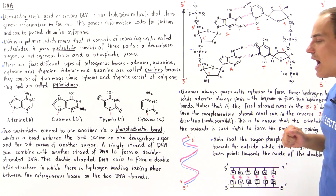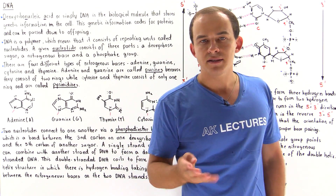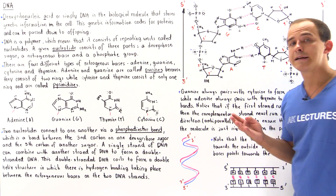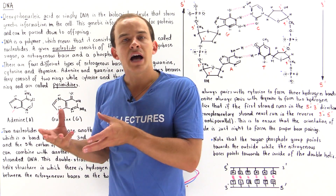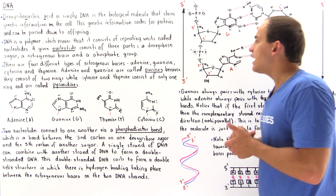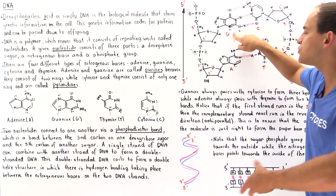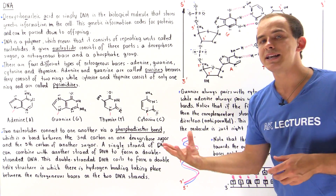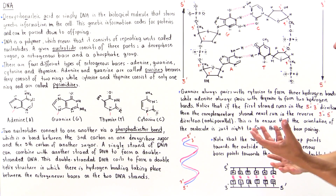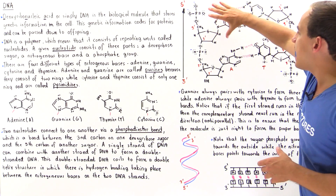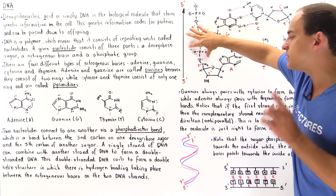Because there are four different types of nitrogenous bases, there are four different types of nucleotides. It is very common to call a nucleotide by the type of nitrogenous base it contains. For example, because a nucleotide contains the guanine nitrogenous base, we simply call it the guanine nucleotide. Similarly, a nucleotide containing the adenine nitrogenous base is called the adenine nucleotide. One nucleotide bonds to a second nucleotide via the phosphodiester bond.